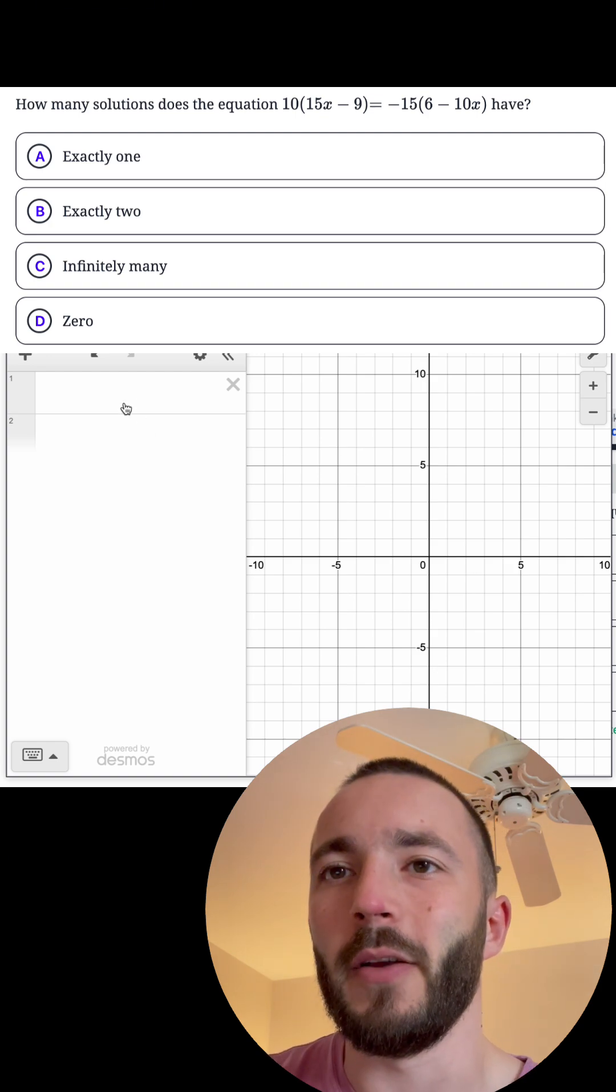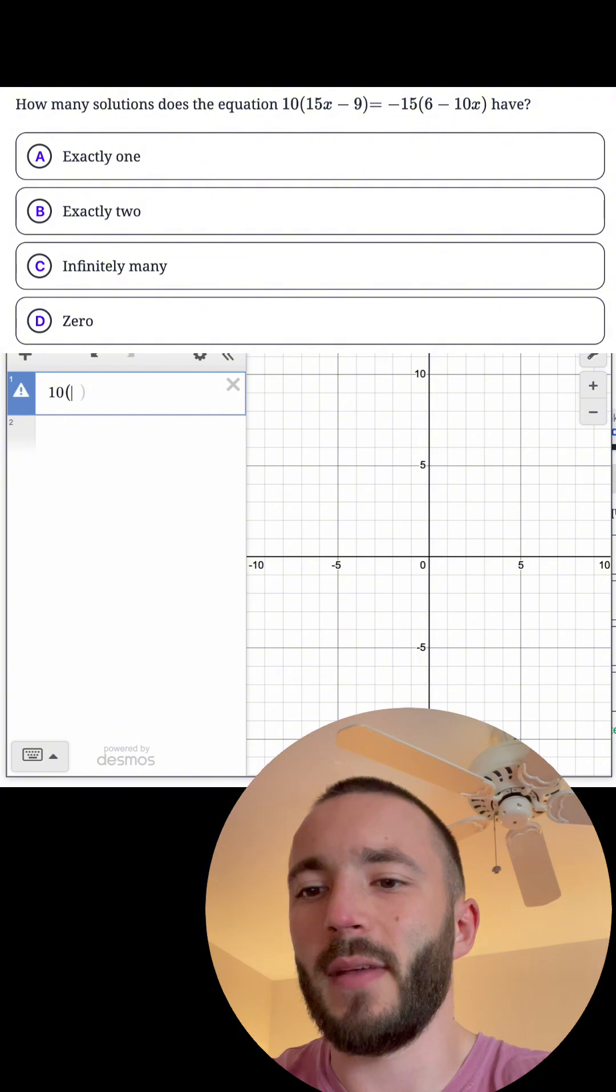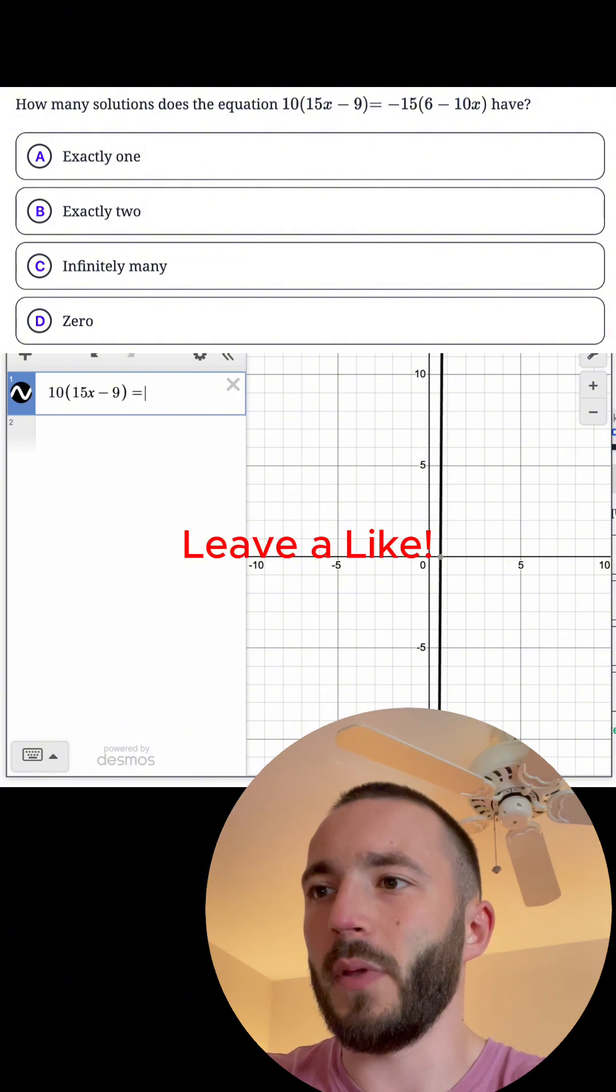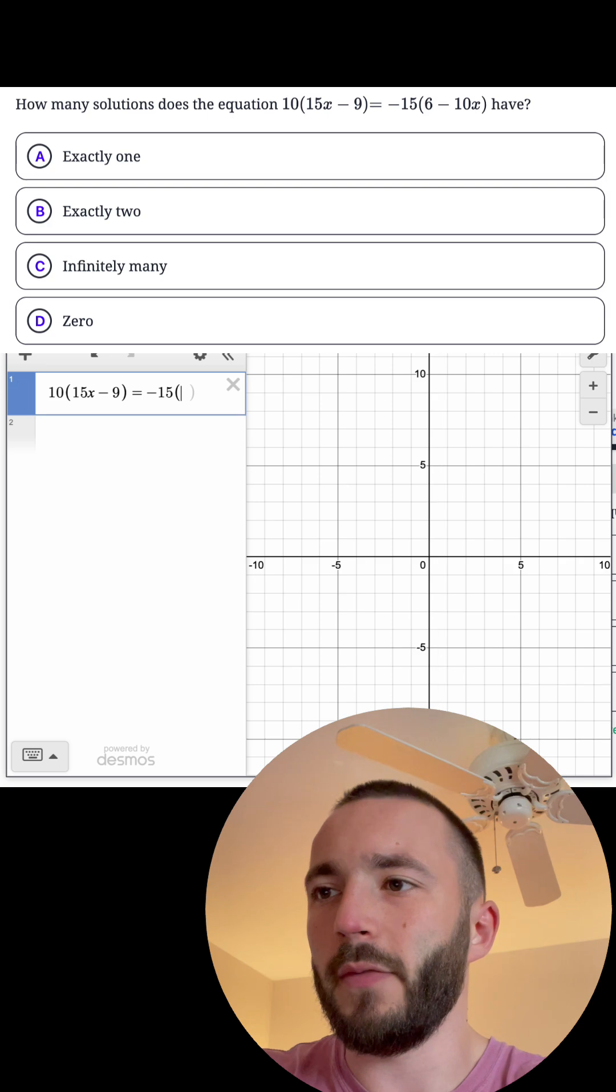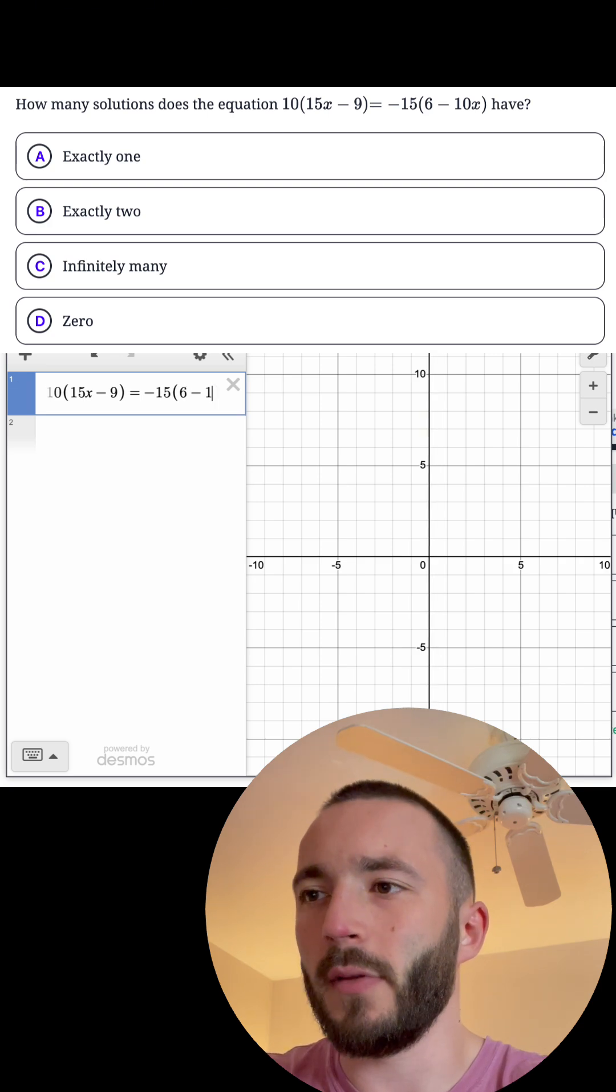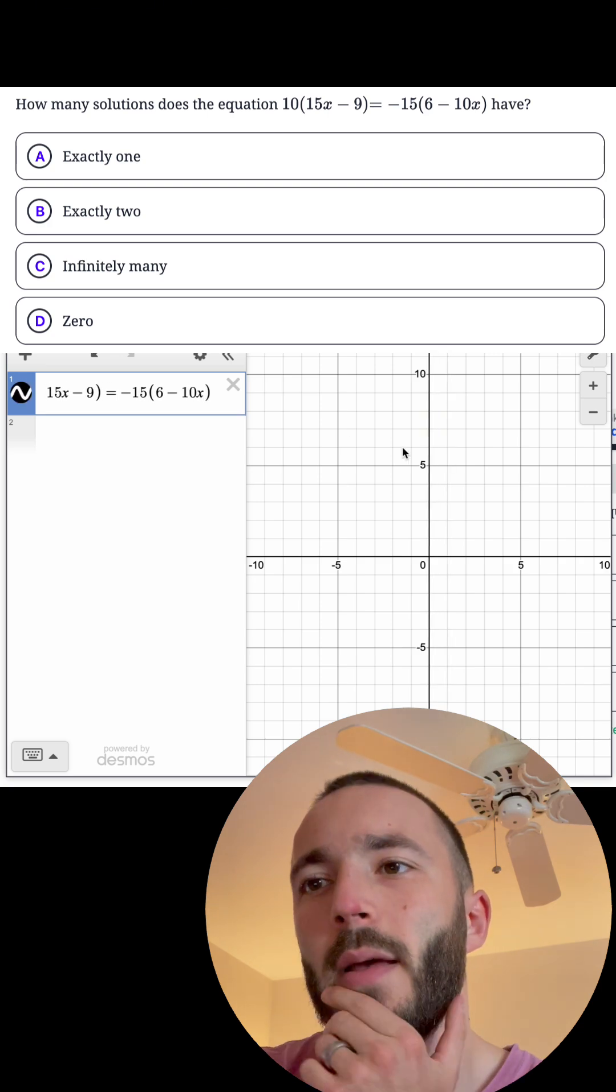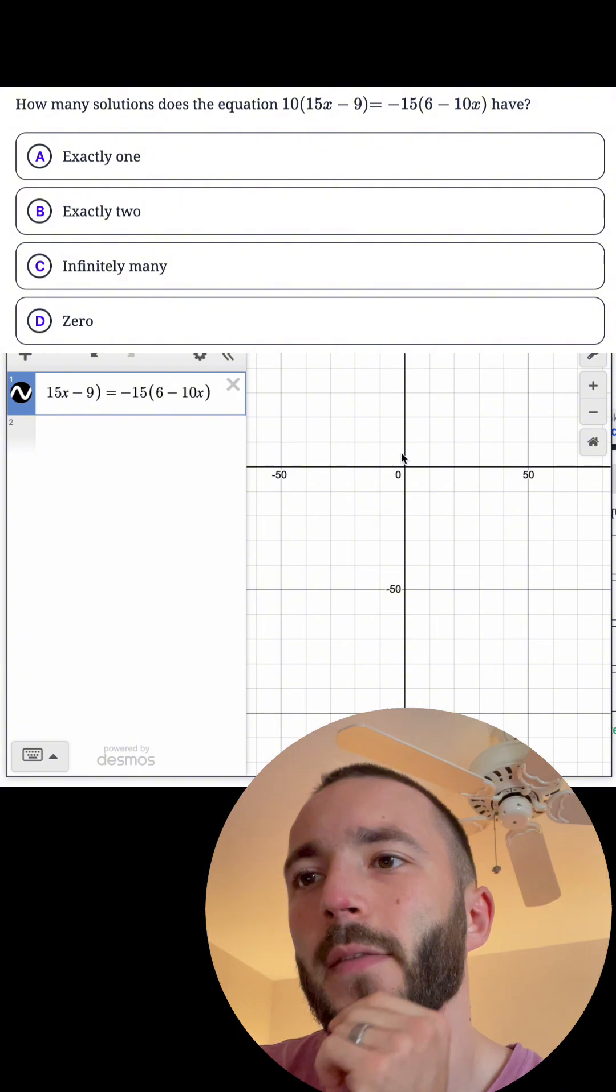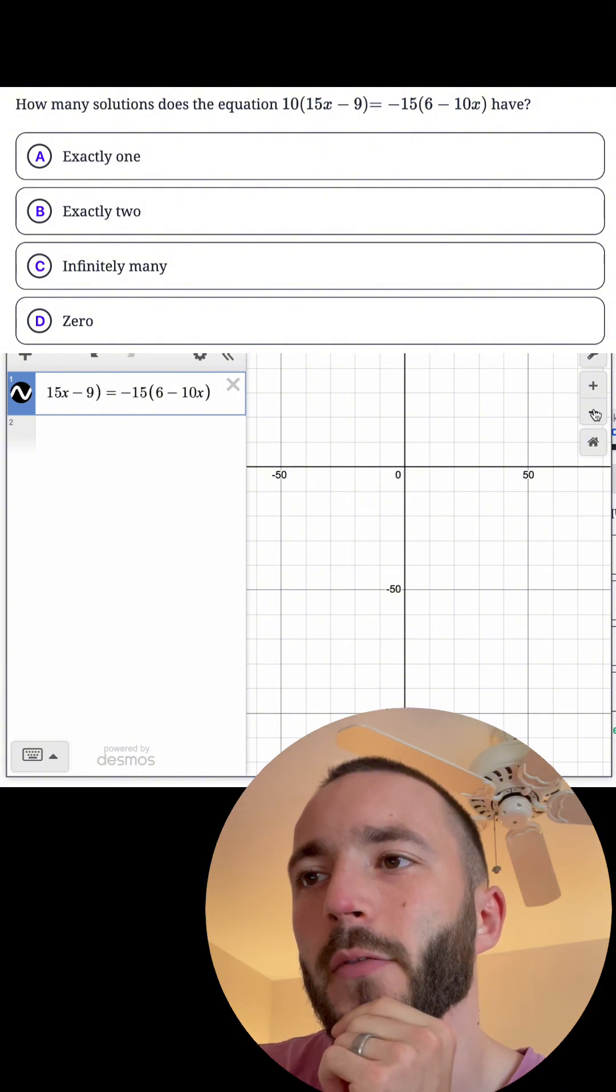They're going to see this equation and they're going to type it right into Desmos like this: 10 times 15x minus 9 equals negative 15. You guys can see the numbers. 10x. And they're going to zoom out and zoom out and see, oh, there's no line. So there's zero solutions.